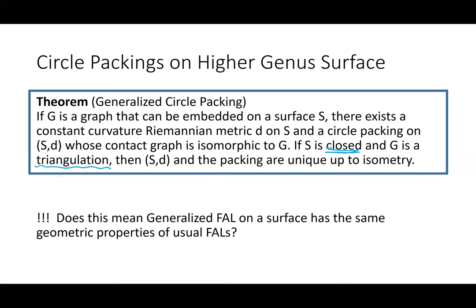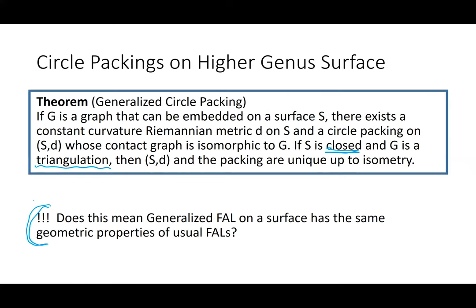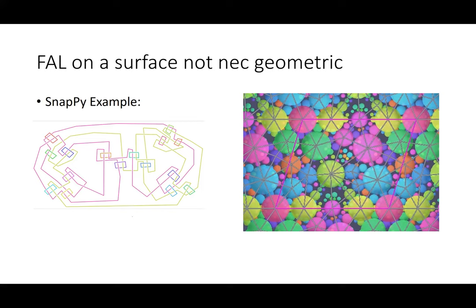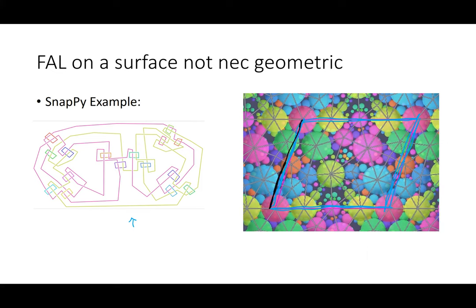John Stewart and I were excited: does this mean generalized fully augmented links on a surface have the same geometric properties? We have the construction, the circle packing corresponds to white faces, and there's a unique Riemannian metric. When I gave the example to SnapPy, it returned cusp fundamental regions that are not right-angled — something went wrong. The gluing didn't work; not everything is totally geodesic. The circle packings don't actually match. The issue is the packing depends on the topology and also on the marking.